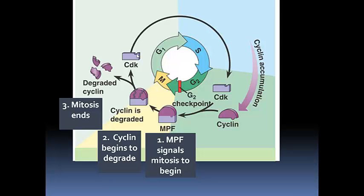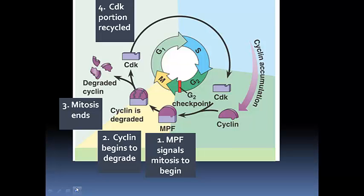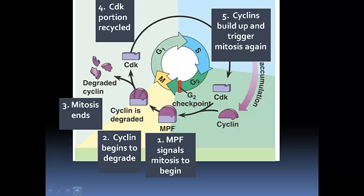If we have MPF — the cyclin and CDK bonded together — mitosis takes place. If we don't have it and the cyclin has degraded, leaving just the CDK, mitosis is done. The CDK portion of the MPF gets recycled; it never breaks apart, so there are pretty consistent levels of CDK through all of interphase. What changes is the ability of that CDK to bind to a cyclin. As we go through the last portion of interphase, the cyclin starts to rebuild and accumulate again, bonding to the CDK, and if enough builds up it can trigger mitosis to happen again.